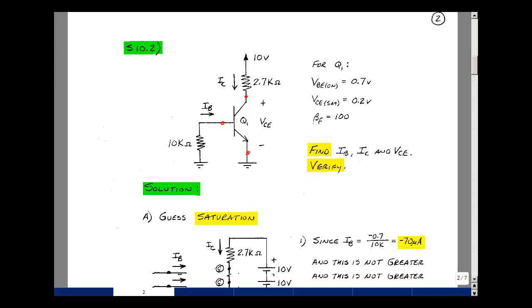Let me guess saturation. I've got 10 volts back to ground, 2.7K resistor, and now my transistor between the collector and the emitter has a voltage source of VCE sat which is equal to 0.2. Between the base and the emitter I have another voltage source of 0.7, and I have a resistor of 10K back to ground. My base current enters the base, collector current enters the collector.